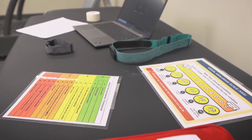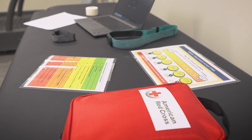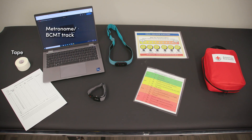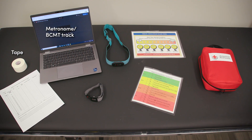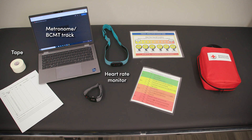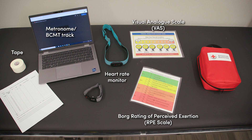It is possible to complete the BCMT with one examiner. Here are the supplies you are going to need to perform the Buffalo Concussion March Test: tape; a metronome or the BCMT track available on our website; a heart rate monitor — we recommend a polar armband or chest band; a visual analog scale or VAS; a board rating of perceived exertion or RPE scale; a data collection sheet available on our website; a chair, water, and a towel for patient recovery after exercise.